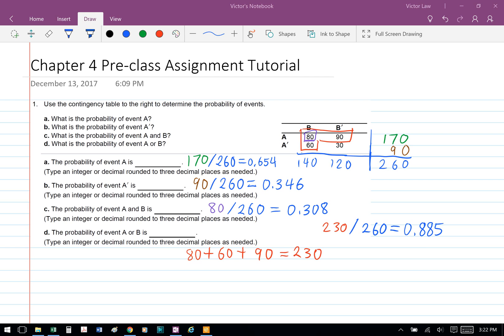Part D, the probability of event A or B is 230 divided by 260, which equals 0.885. How we get to 230 is we add up all the events that have A or B: 80 plus 60 plus 90, which equals 230.